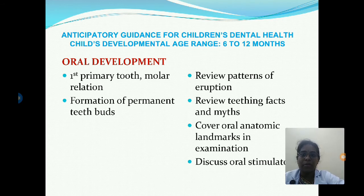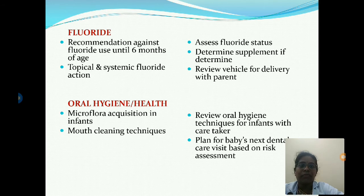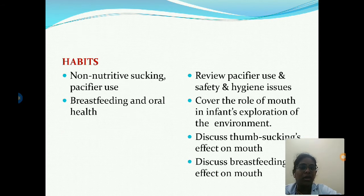For six to twelve months, oral development topics include the first primary tooth, molar relation, formation of permanent tooth buds, review of eruption patterns, teething facts, oral anatomical landmarks, and oral stimulators. Regarding fluoride, use is not recommended until six months of age; topical and systemic fluoride action should be reviewed, proper fluoride status assessed, and supplement determined if necessary. Oral hygiene includes mouth cleaning techniques, review of oral hygiene with the caretaker, and planning the baby's next dental visit based on risk assessment.